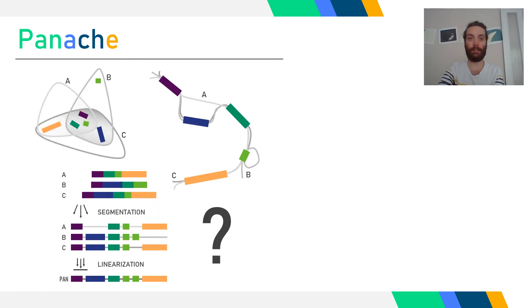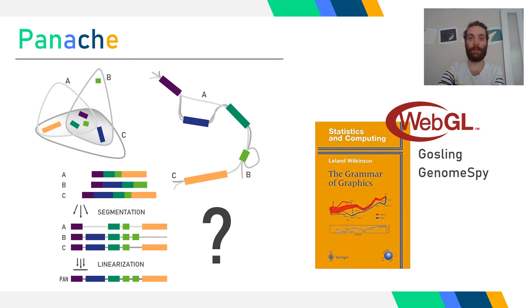In its current state, Panache is one more step towards visualization of pan-genomes, but still lacks features, especially regarding structural variations. I wish to further develop its representations to offer a more comprehensive tool. Moreover, we wish to optimize it to provide a better user experience by enhancing the responsiveness — one way would be to use WebGL technologies for drawing instead of SVGs. To this end, I'm really interested in recent visualization grammars like GenomeSpy and Gosling that could allow a better implementation. Needless to say, I'm going to listen to the next talk with great attention.